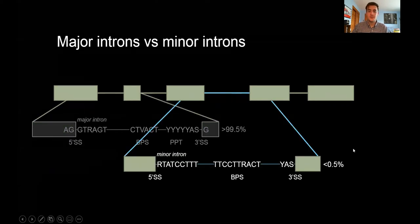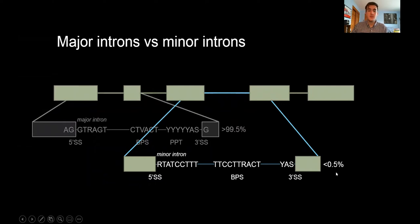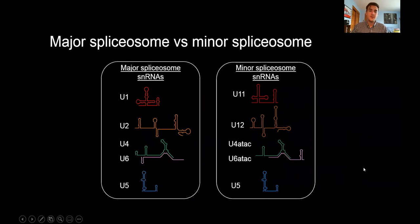Conversely, minor introns, which I'm showing you as blue lines, are defined by highly divergent yet highly conserved nucleotide sequences at the 5-prime splice site, branch point sequence, and 3-prime splice site. Because small nuclear RNAs of the spliceosome base pair to these nucleotide sequences for intron identification and removal, these different nucleotides necessitate that there exist two distinct spliceosomal machineries to remove each intron type.